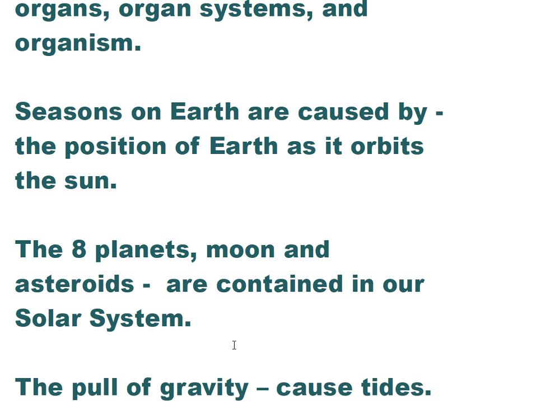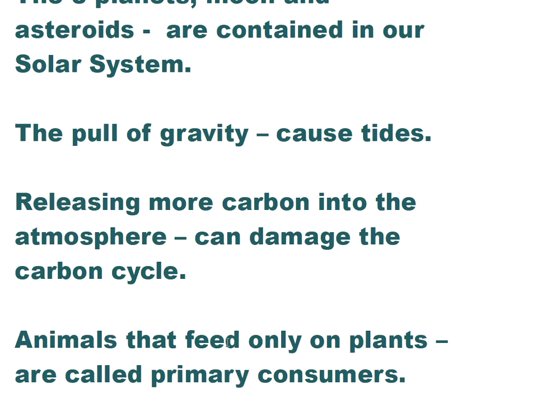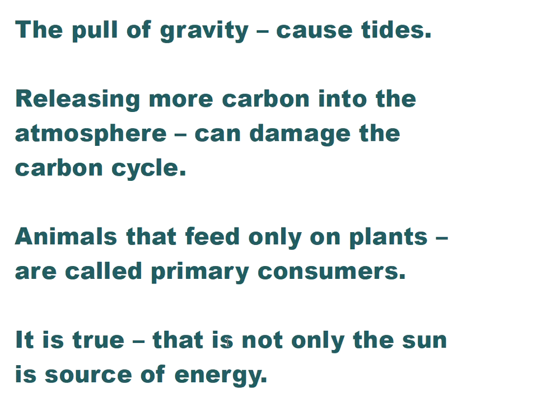Seasons on Earth are caused by the position of Earth as it orbits the sun. The eight planets, moons, and asteroids are contained in our solar system. The pull of gravity causes tides. Releasing more carbon into the atmosphere can damage the carbon cycle. Animals that feed only on plants are called primary consumers.